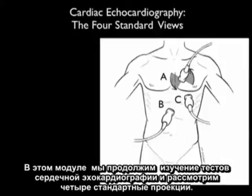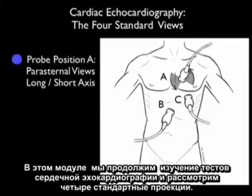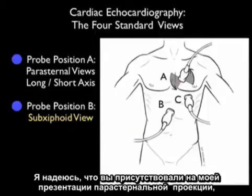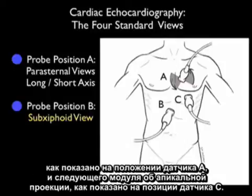In this module, we'll continue our journey through the cardiac echocardiography examinations looking at the four standard views. We're specifically going to focus on probe position B as shown in the pictorial here, the subxiphoid view of the heart. Hopefully you've joined me prior for the parasternal views as shown in probe position A, and an upcoming module on the apical view as shown in probe position C.